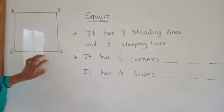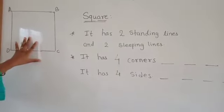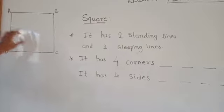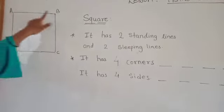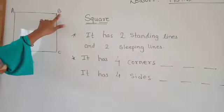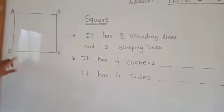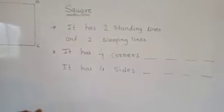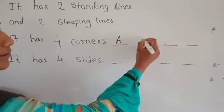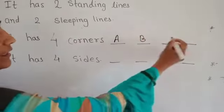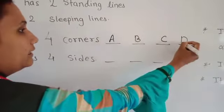Now it has four corners. Tell me the names of those corners: corner A, corner B, C and D. These are the corner names — corner A, corner B, C and D.